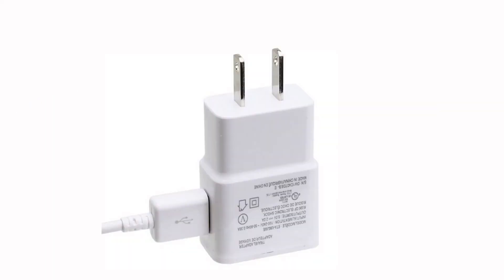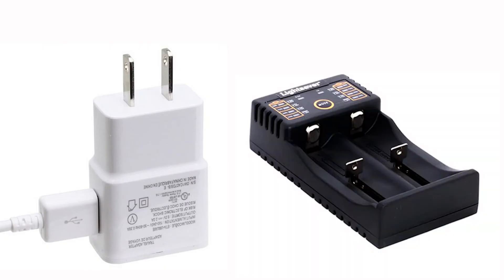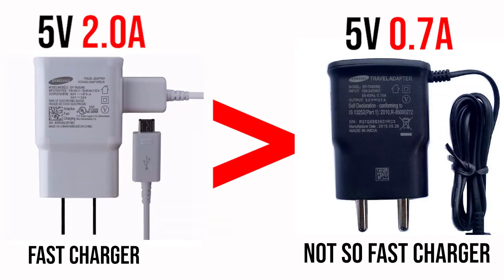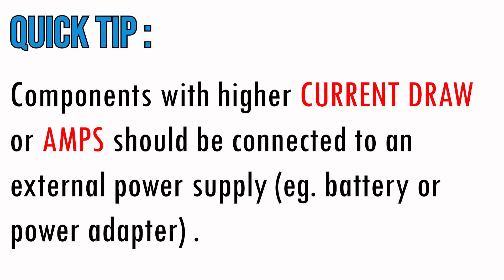You can mostly find ampere ratings on your chargers, like cell phone chargers or any other battery chargers. The higher the amperes of the charger, the faster it's more likely to charge or fill your batteries. Note that our Arduino board can only supply 40 milliamps or 0.04 amps per pin, so having too many components sharing the same pins might cause damage to our board or our components.